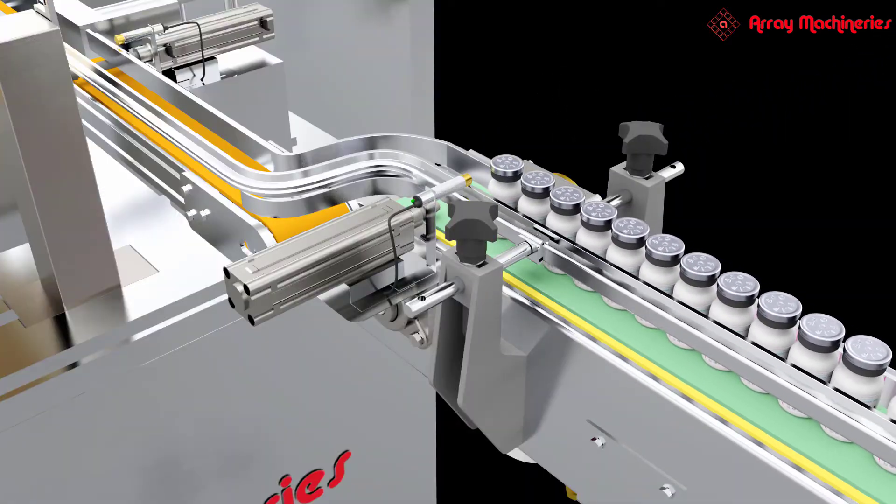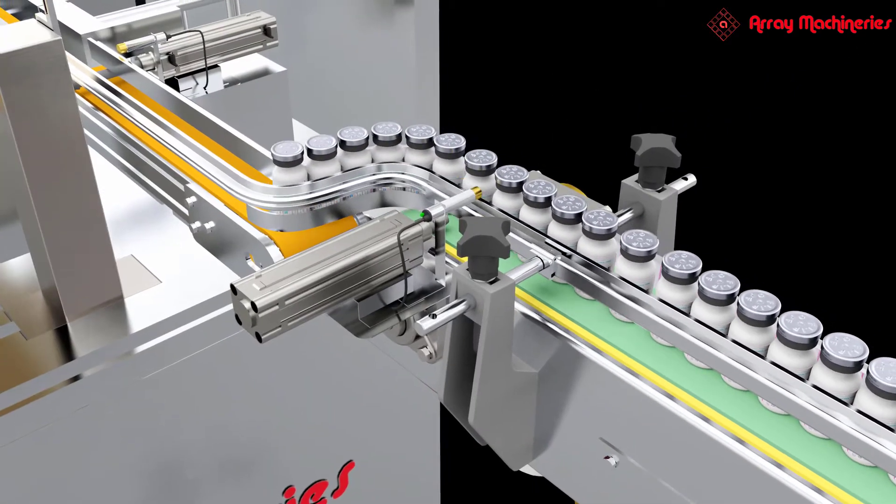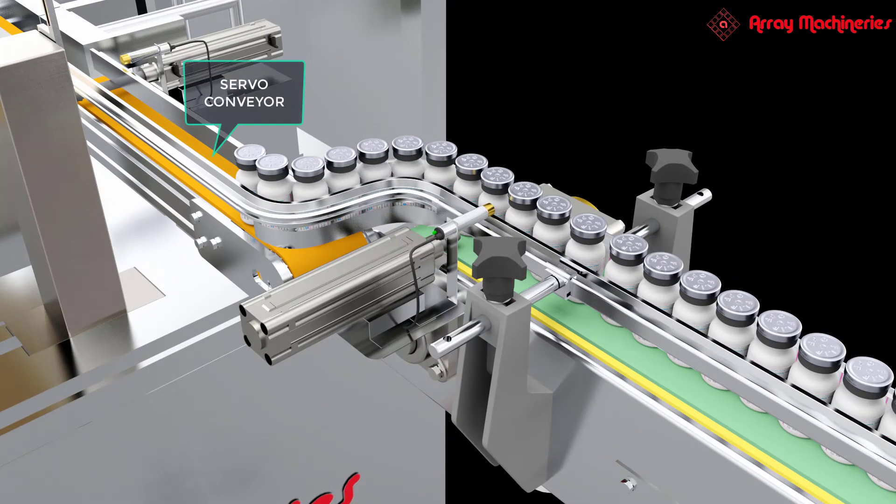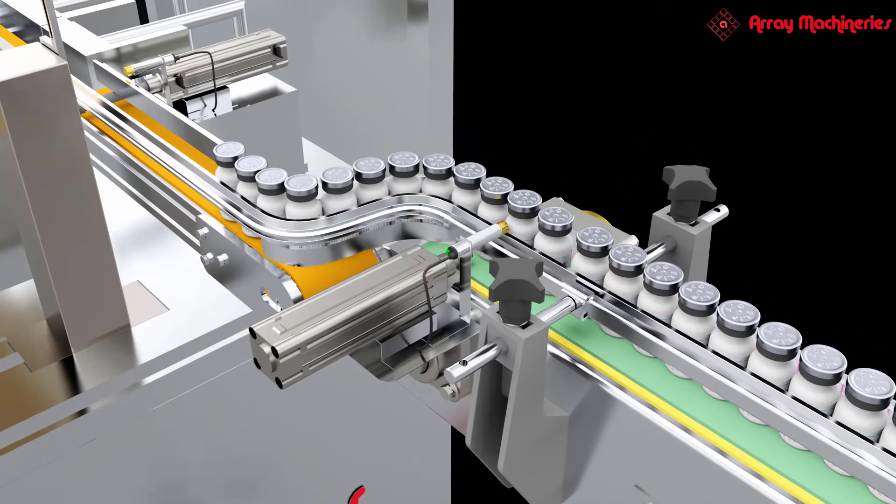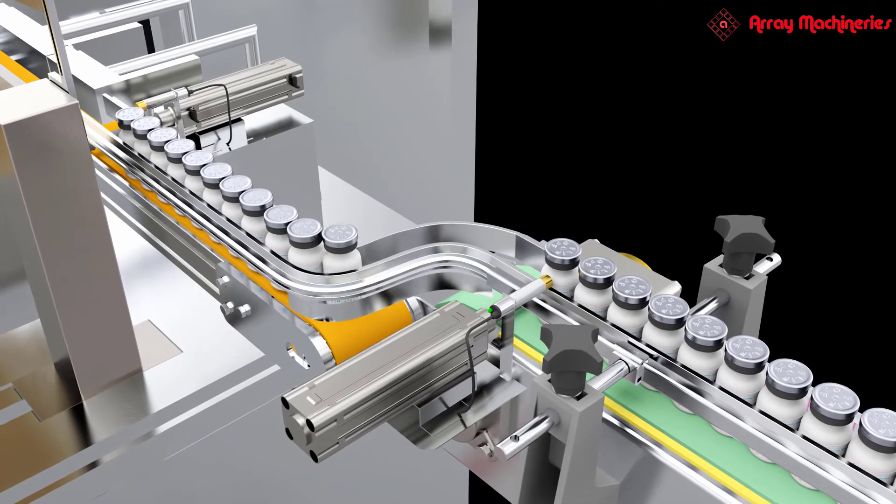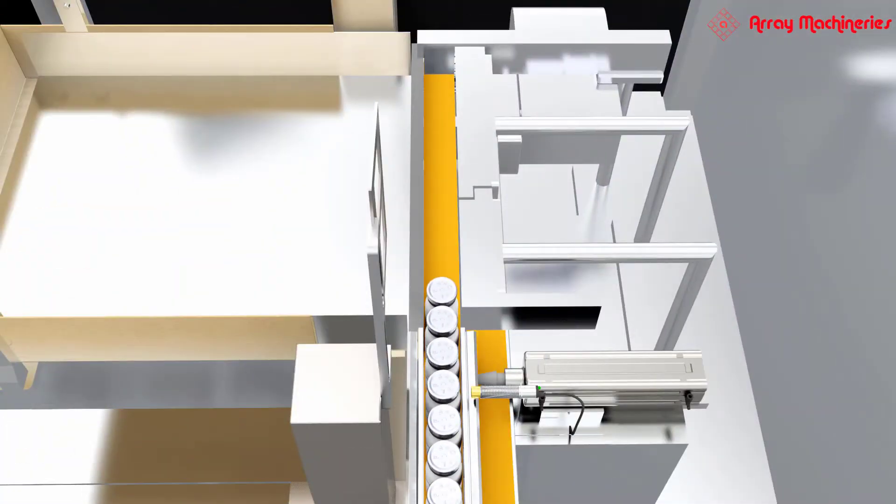Vials are conveyed from the continuous running conveyor to a servo conveyor. While the servo conveyor runs, sensor and stopper 1 let pass a definite number of vials to the servo conveyor. Sensor and stopper 2 let pass the vials through.